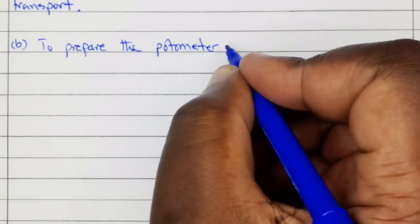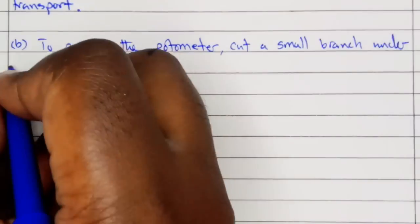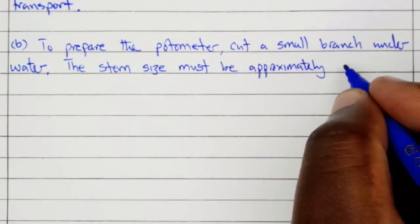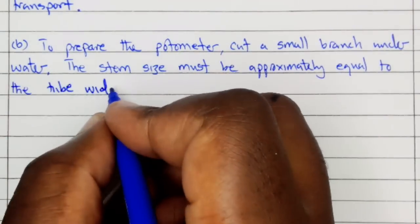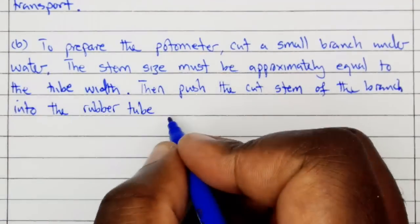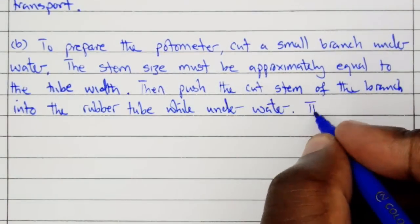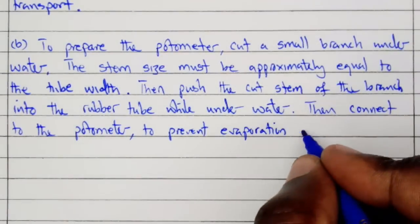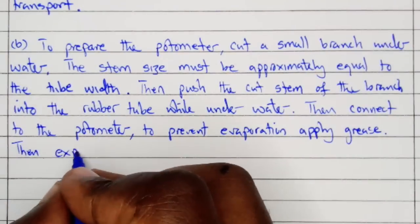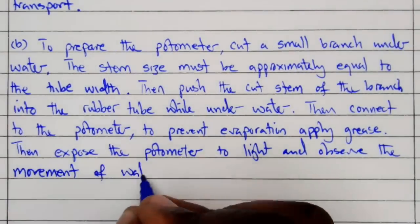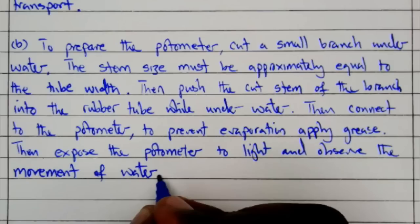Part B: To prepare a potometer, cut a small branch underwater. The stem size must be approximately equal to the tube width. Then push the cut stem of the branch into the rubber tube while underwater to avoid air bubbles. Then connect the potometer. To prevent evaporation, apply grease. Then expose to the potometer and observe the movement of water in the meniscus.